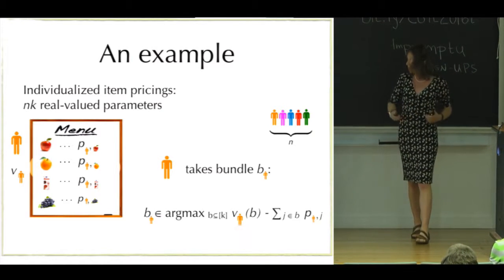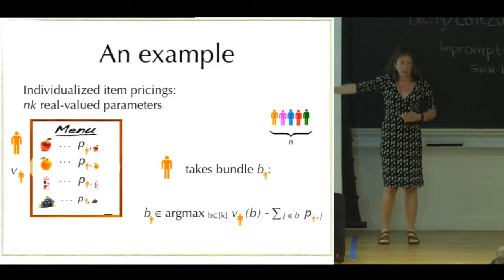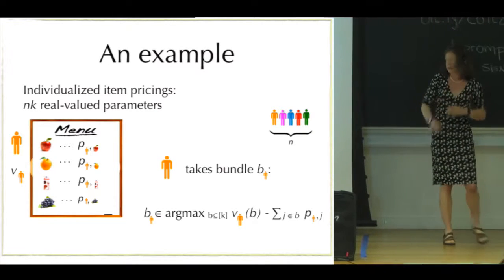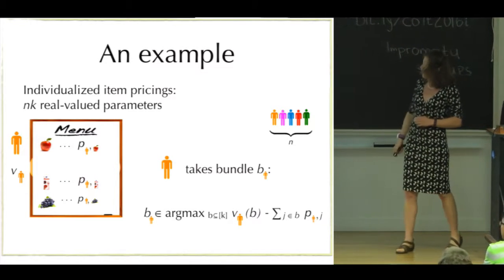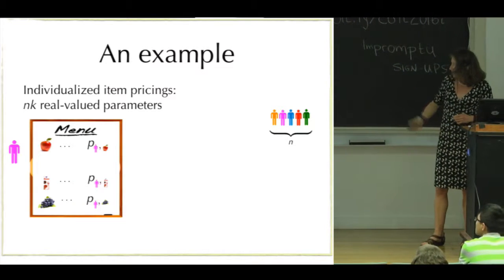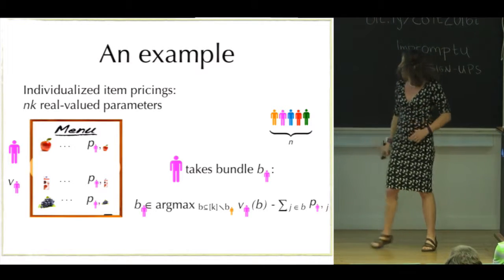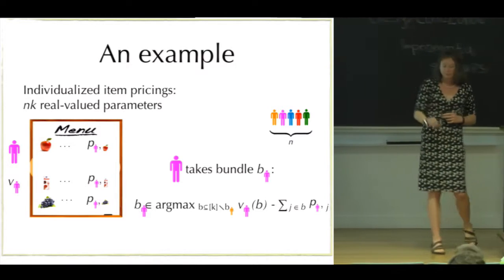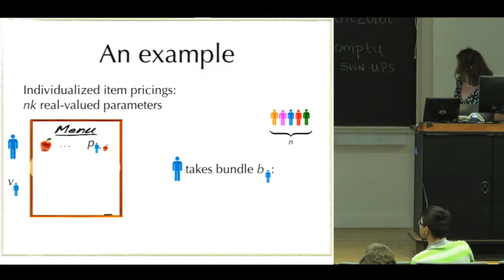We're going to assume that they're going to take a bundle, a subset of those items, which maximizes their quasi-linear utility, which just means they're maximizing their value for that bundle minus the price for that bundle, which is just the sum of these real-valued prices. Then after the orange person chooses their favorite bundle, we remove that bundle, all of those items, and repeat for the next person in our order. We assume that each one of them is going to do this on the remaining subset of items. Note that the prices for the items have changed—they're now specific to this new person.